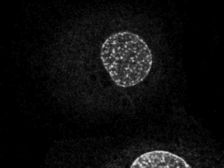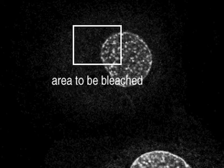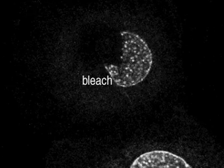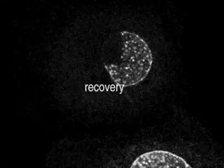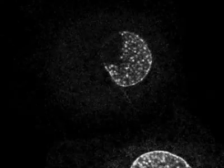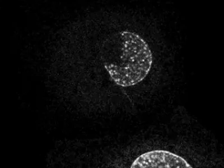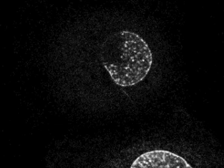The same experiment can be repeated using a protein that is firmly anchored and not free to diffuse. Here, we observe GFP fused to a protein of the inner nuclear membrane that binds tightly to the meshwork of the nuclear lamina. After photobleaching, no fluorescence recovery can be seen over the same timeframe.